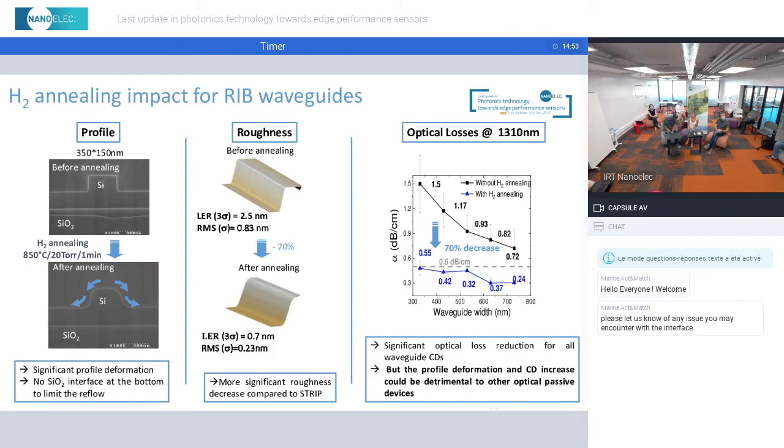However, if we apply such treatment on RIB waveguides using the similar conditions that I've shown before, you see that this time there is a significant impact on the profile. The RIB shows severe profile deformation, especially at the bottom where we can clearly observe a big CD increase. This is because there is no more silicon oxide interface to limit the silicon reflow.